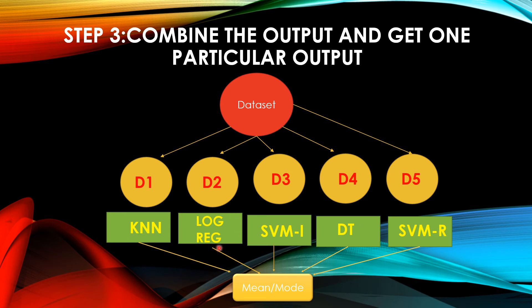If we are dealing with a regression problem, we will take the mean. But here, if you observe, these are all classification problems. Hence, we will take the mode over here. Basically, the value which occurs the most number of times will be chosen over here.